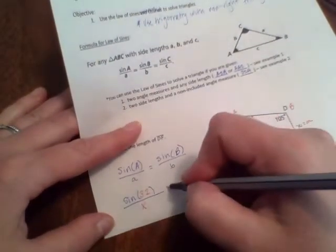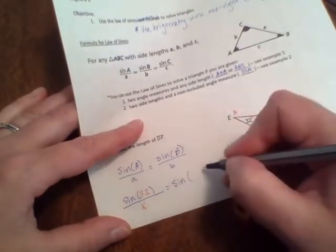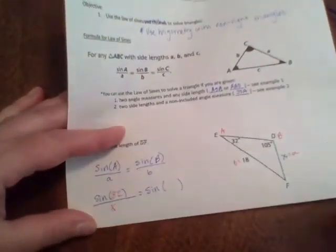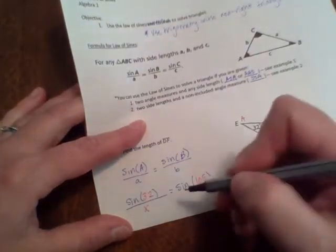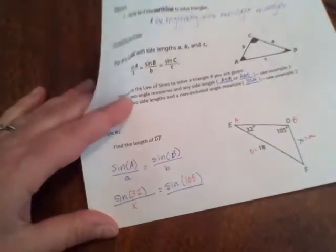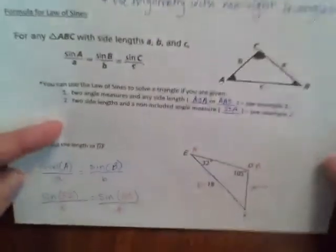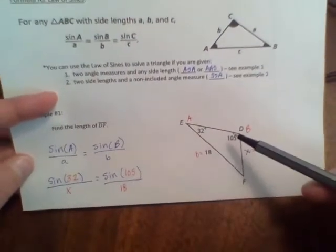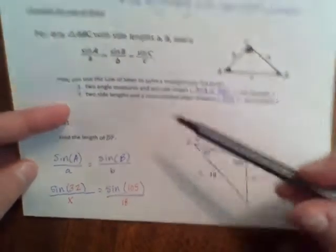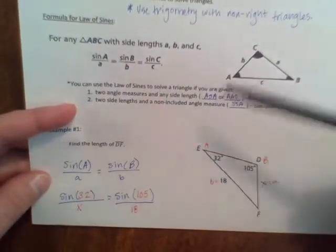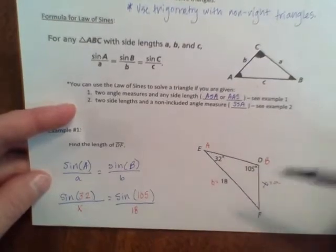All right, then the next piece is sine of B, and so we're going to do sine of what we've said is our B angle, which is 105. And that's going to be over our side length, which is 18. So again, basically you take sine of whatever angle it is and put it over its opposite side length. So you don't necessarily need to label them as A, B, and C as the diagram has or as the formula has, but it's nice to be able to kind of transition between one and the other.